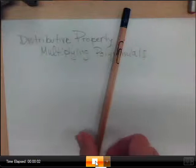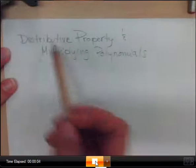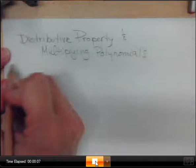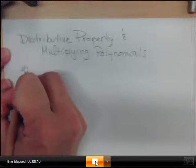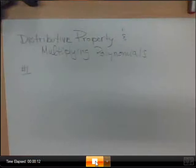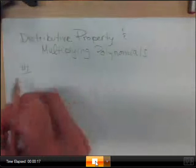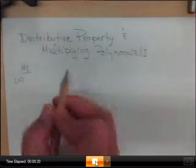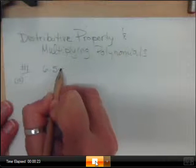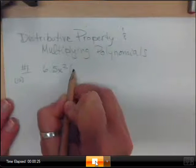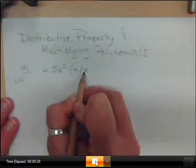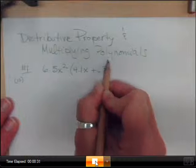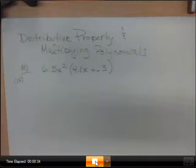Alright, so we are going to look at a couple of examples of distributive property and multiplying polynomials. During our flashback today, we did one similar to this, so we're going to start with the distributive property. We're going to do an example like this one. It's actually number 12 on the new work that you're going to get. It's 6.5x² times (4.1x + 0.3). So that's our first example, 6.5x² times (4.1x + 0.3).